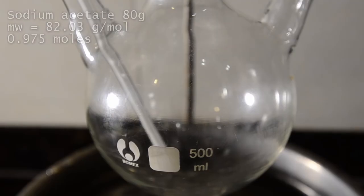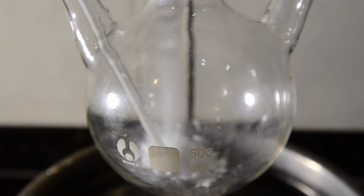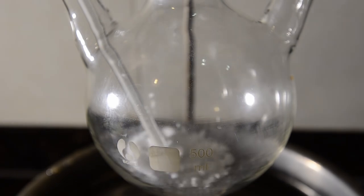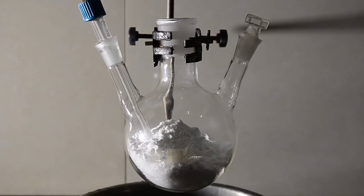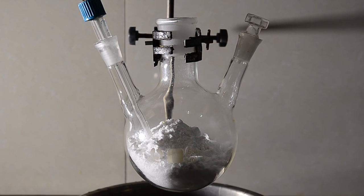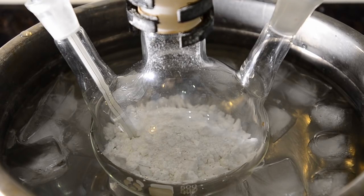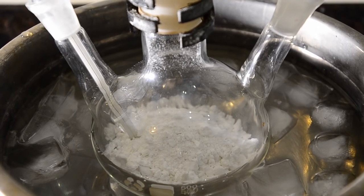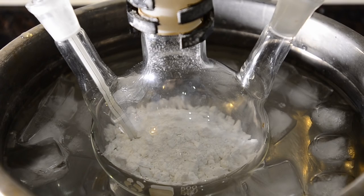Weigh out 80 grams of anhydrous sodium acetate and place this into a dry 500 ml flask. We've added a thermometer to track the temperature. Now stopper the flask and place it into an ice bath and get the contents as cool as you can.